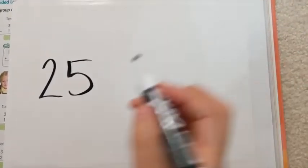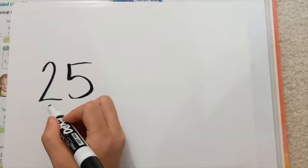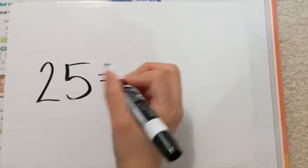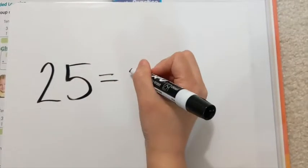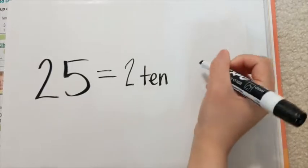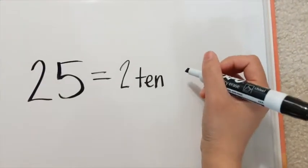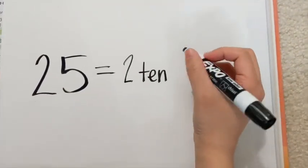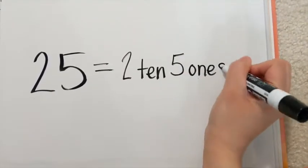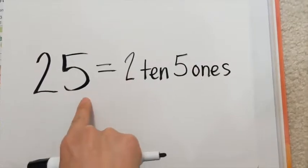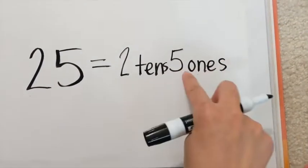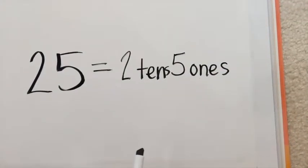You're supposed to read this as two tens and five ones. So 25 is the same thing as two tens. I'm not changing anything, I'm not adding anything, I'm not subtracting anything. It is exactly the same thing as two tens and five ones. Two tens, five ones — same thing. Now it's the exact same thing.